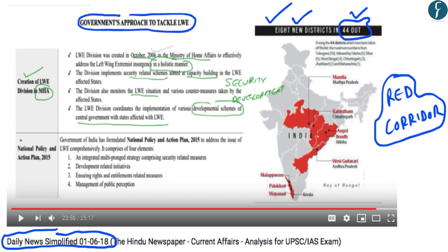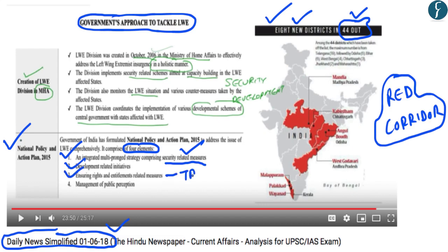The second part of the question - explaining the government's approach to tackle left-wing extremism - was covered in DNS of 1st June 2018. The government has been implementing the National Policy and Action Plan 2015, which comprises four elements: first, an integrated multi-pronged strategy comprising security-related measures; second, development-related initiatives; third, ensuring rights and entitlements related measures including tribal rights, Forest Rights Act, and effective implementation of PESA; and fourth, management of public perception.